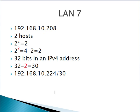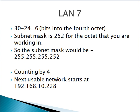This will be our server LAN — with one server and one host address needed for the interface, we just need two addresses. 2 squared is 4, minus 2 is 2 usable. 32 minus 2 is 30, so the notation is 192.168.10.224/30, and the subnet mask will be 252, counting by 4.